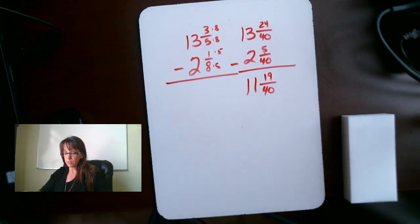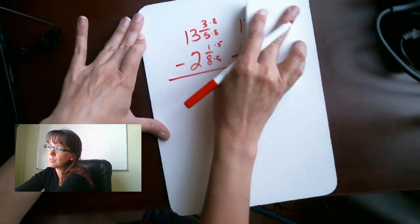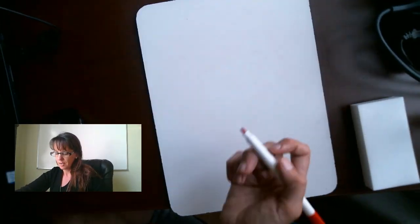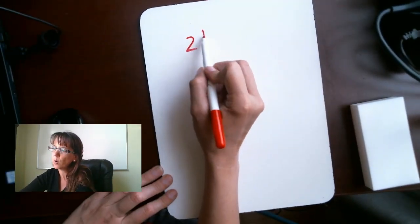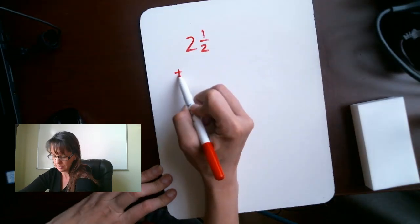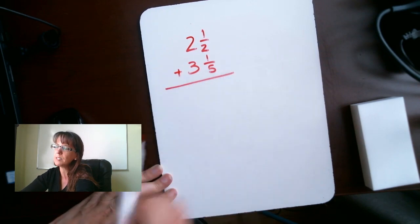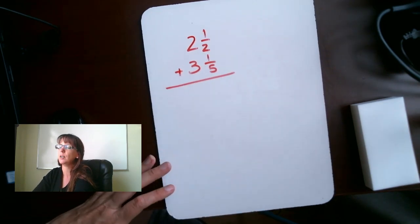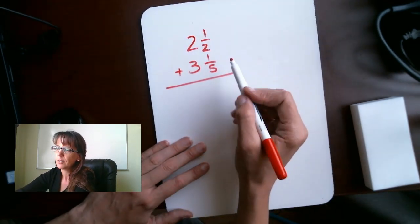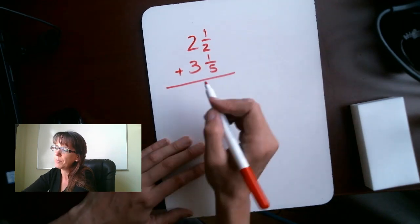So, now what I want you guys to do is practice doing one of those on your own. So, let's take a peek at, let's do, actually, yep. Let's do this. I want you to practice 2 and 1 half plus 3 and 1 fifth. Go ahead and pause the video and give that a shot. Good. Okay. So, now that you're back,